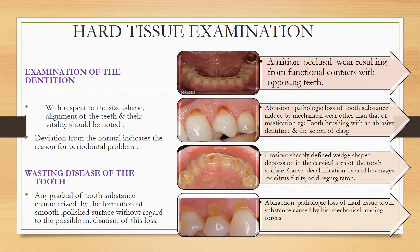This can be explained under various wasting diseases. Any gradual change of tooth substance characterized by the formation of smooth polished surface without regard to the possible mechanism of this loss can be defined under different terminologies: attrition, abrasion, erosion, and abfraction.